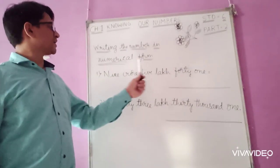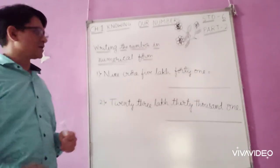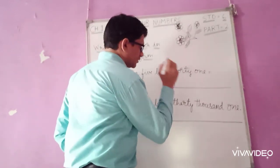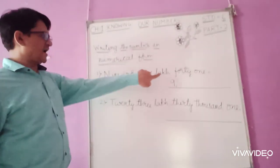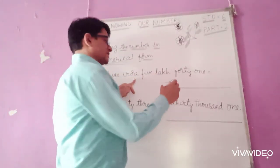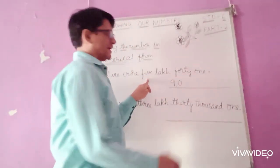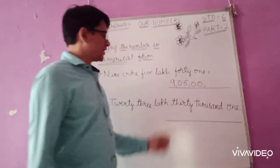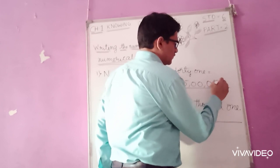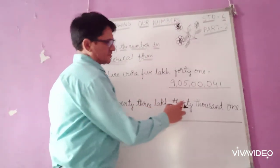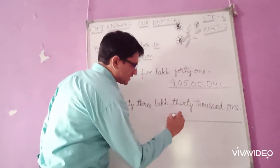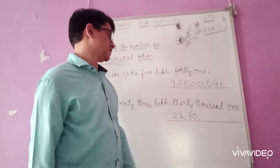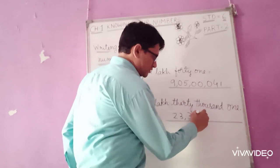Now we will write numbers in numerical form. The first number is nine crores five lakhs forty-one: write 9 (crore comma), then 0 for ten lakhs, 5 for lakhs, then no thousands so two zeros, no hundreds so one zero, then 41 — giving 9,05,00,041. The next number is twenty-three lakhs thirty thousand one: 23 lakhs, 30 thousands, no hundreds or tens, so the number is 23,30,001.